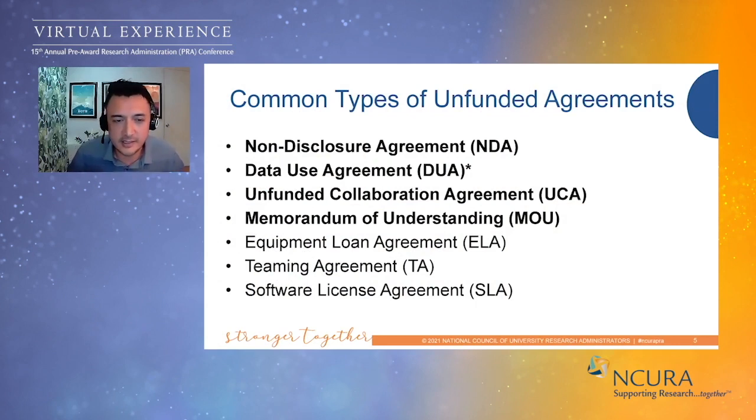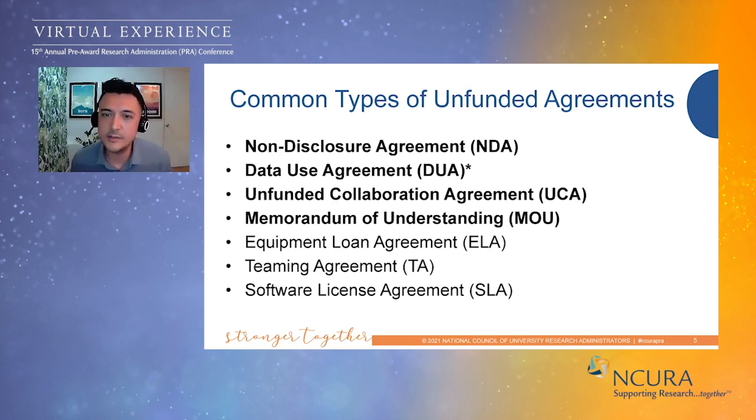We've separated these into two big buckets: the most common types of agreements at the top, and others we work on that may not be as frequent. The overarching idea to keep in mind is the reason for these agreements. First, to establish rights and responsibilities on behalf of the university and the other party — which could be the federal government, a non-profit, an industry partner, or another university. Second, to offer legal protections to both the disclosing and receiving party when it comes to confidential information or data.